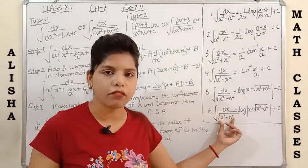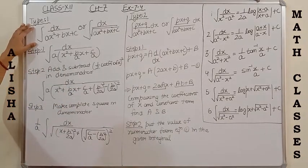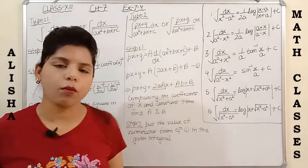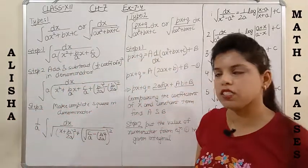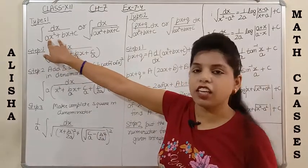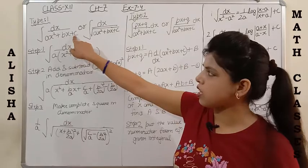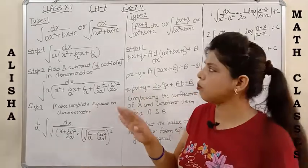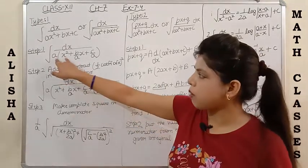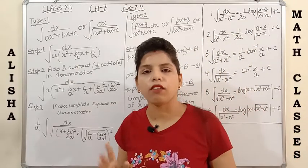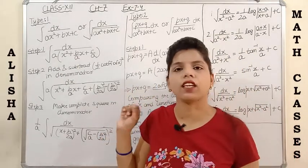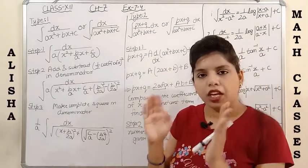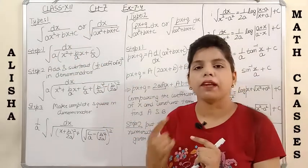Whenever we have to use this type of formula, we have to form the equation in standard form. In type 1, we have 1 upon a quadratic equation. The standard form of a quadratic equation is ax² + bx + c. So in the denominator we are having ax² + bx + c — it hardly matters whether it is without square root or with square root; in both methods you follow the same steps. The first step uses the complete square method from class 10, chapter 4.